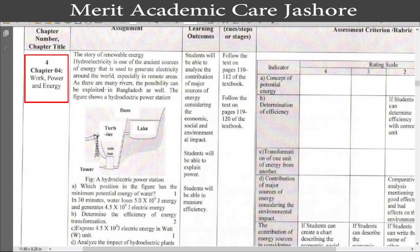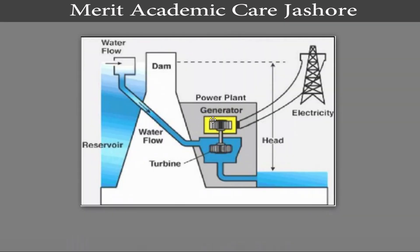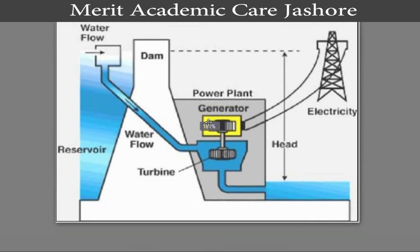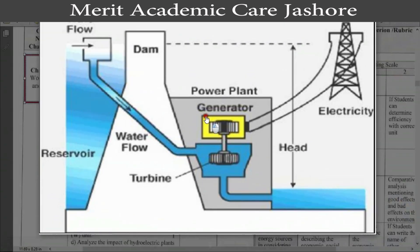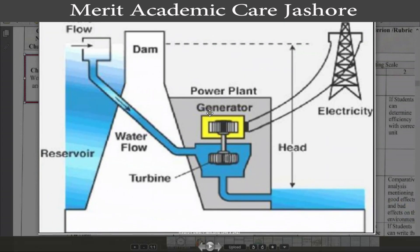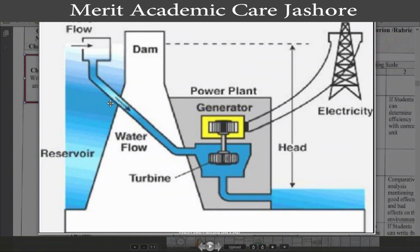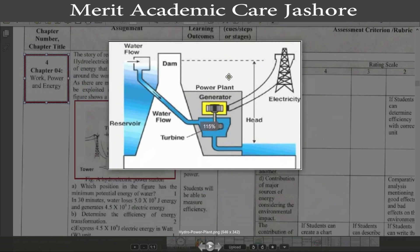As there are many rivers, the possibility can be explored in Bangladesh as well. The figure shows a Hydroelectricity Power Station. You can see in the screen the figure of the Hydroelectricity Power Station. The given picture in the assignment is not clear, that's why I opened a new picture. You can see in the picture the Hydro Power Electricity Station — this is the water flow, this is the dam, and this is the turbine. When water flows from the narrow pipe, the turbine moves and the generator produces electricity, which is then supplied through the tower. This is the main scenario of the Hydro Power Electricity Station.